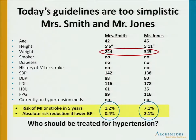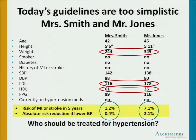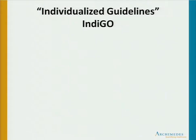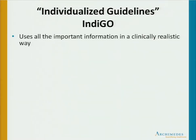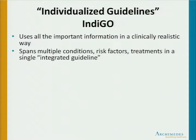That's because there are a number of other risk factors not taken into account by the guideline — weight and BMI, Mr. Jones has a higher LDL, a lower HDL good cholesterol, and he's got prediabetes. Those risk factors cause him to have higher risk and greater benefit than Mrs. Smith. So what we'd like to do is individualize the guideline to each particular patient by taking into account all the important information, spanning multiple conditions, all the risk factors at one time, and considering all of the treatments both one by one and in various combinations — creating a single integrated guideline.